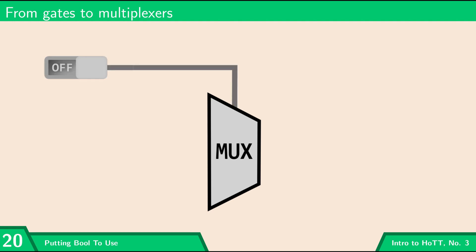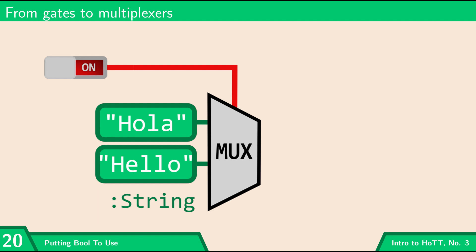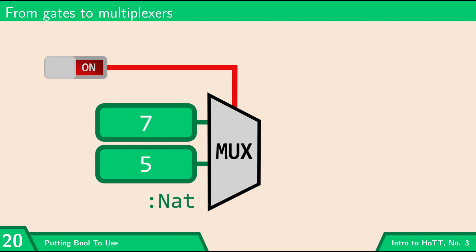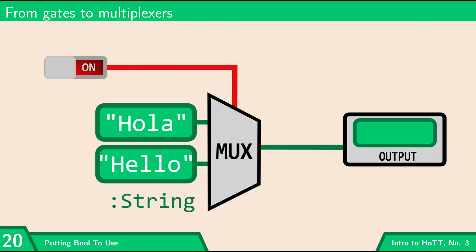Here's how a multiplexer works. On the top it takes a boolean input — this can be either on or off — and you can attach a whole boolean circuit to do more complex logic. Also attached to this multiplexer are going to be two terms of some type. They could be 'hola' and 'hello', which are both terms of type string, or seven and five, which are both terms of type nat, or they could be booleans. Whatever type these two things are, that is going to be the type of the output of the multiplexer. These two inputs besides the boolean input have to be of the same type, and that has to be the same type as the output.